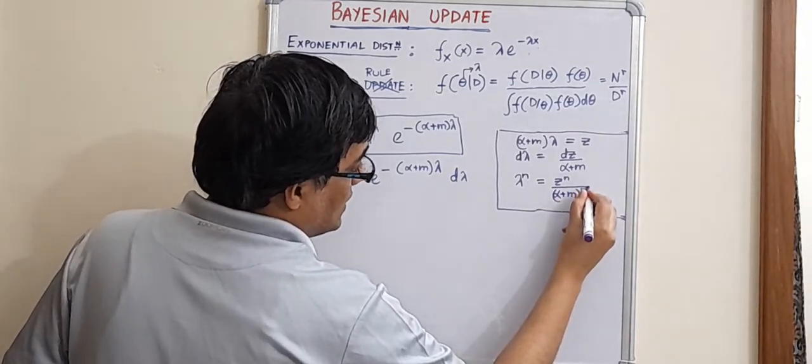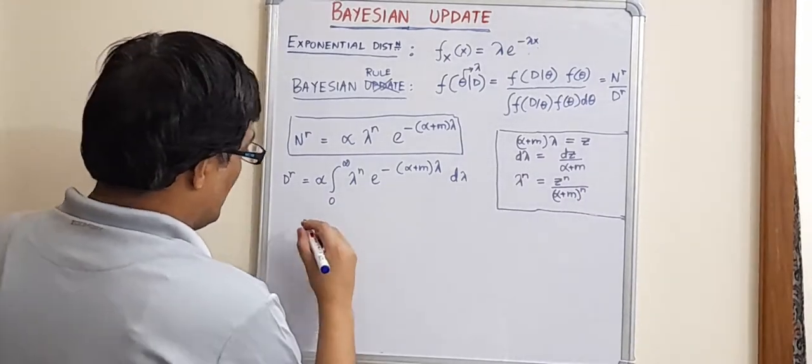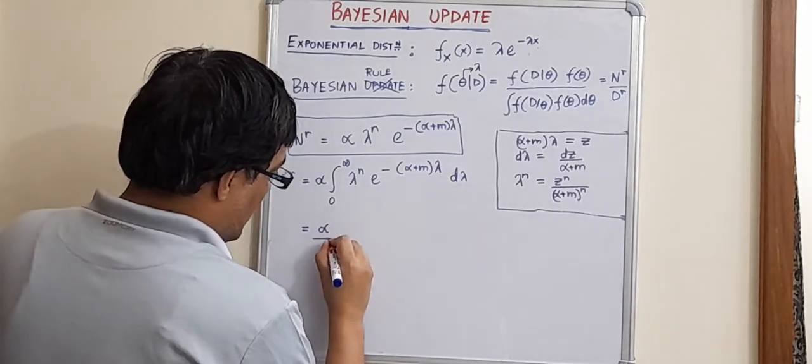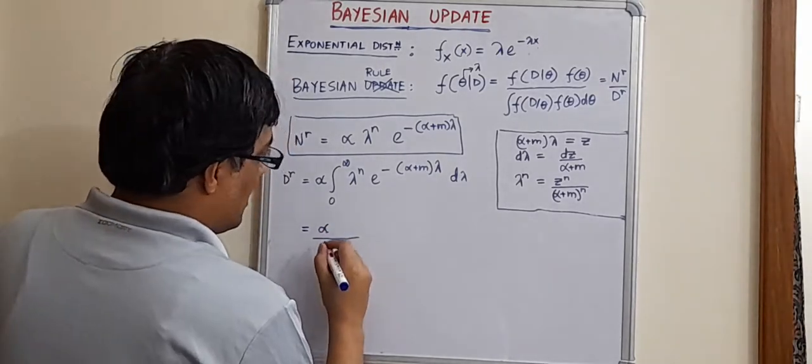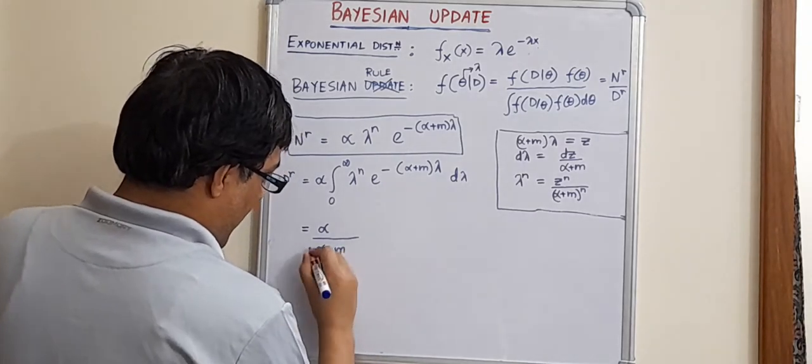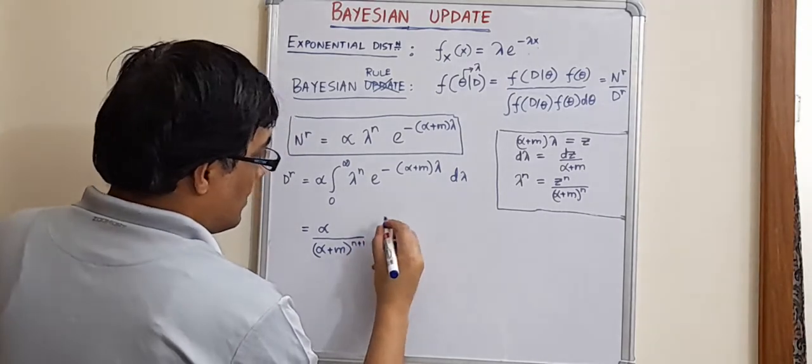So, these, if these substitutions are kept in mind, then this integral simplifies to alpha over alpha plus m to the power n plus 1, okay?